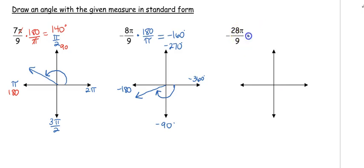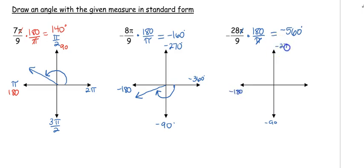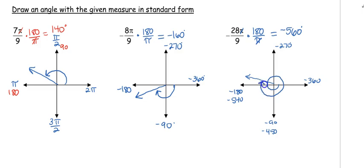For negative 28 pi over 9, convert by multiplying by 180 over pi: 28 times 180 divided by 9, don't forget the negative, gives negative 560 degrees. We know it's more than 360 so it requires more than one turn around the circle. Negative 450 is one and a half turns, negative 540 is one and a half turns — I need negative 560, so I'm 20 degrees past negative 540. When drawing, go past it once, all the way around the circle again, and end there the second time around, still starting at 0.